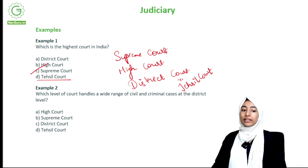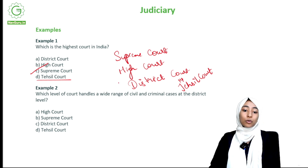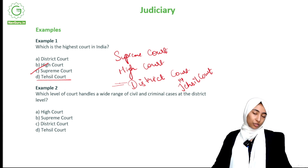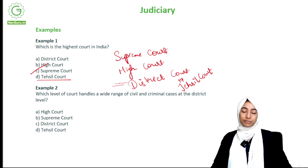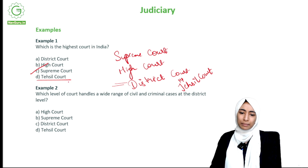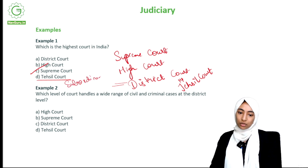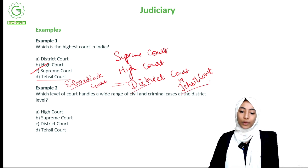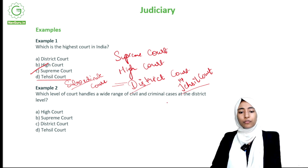If the tassel court is another name for the district court, what is yet another name? The other name is subordinate court. So district court, subordinate court, and tassel court are all names for one single court.